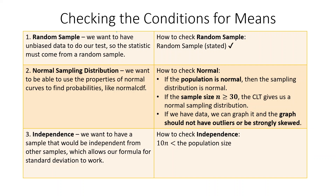After we write our hypotheses and define our parameter, we check the conditions for our test. The first condition is we need a random sample in order to have unbiased data — if we have biased data, nothing we do in our test is going to matter. We check this by writing 'random sample' with a check mark. The next condition is an approximately normal sampling distribution, because we're going to use normal CDF to find our p-value.